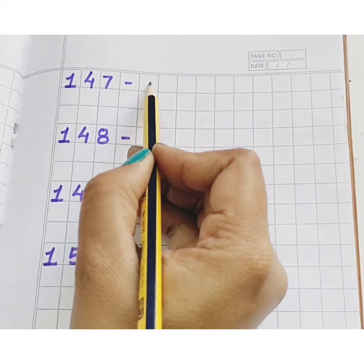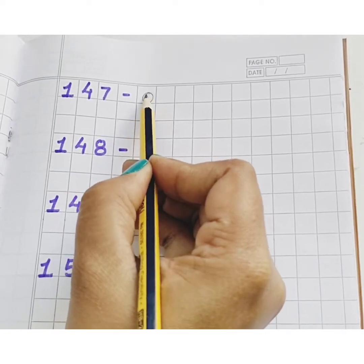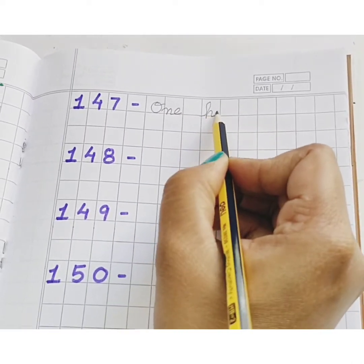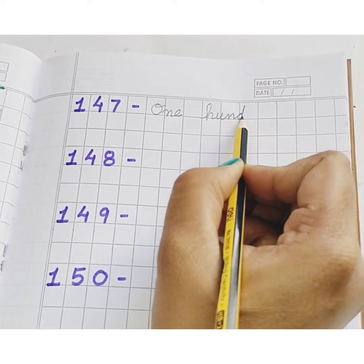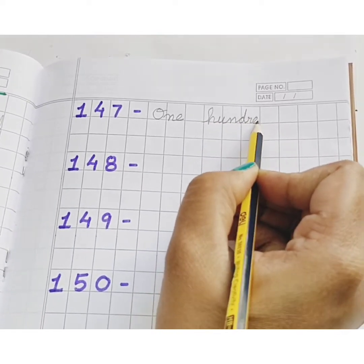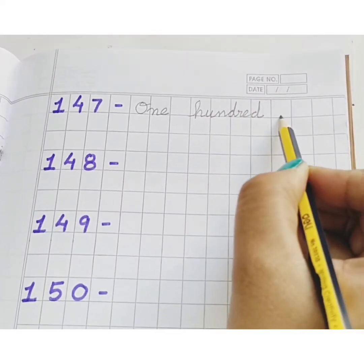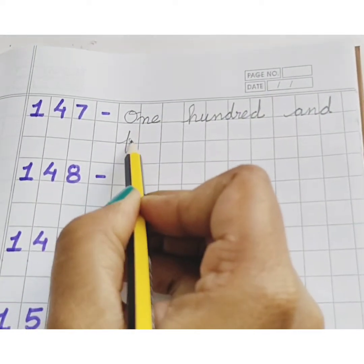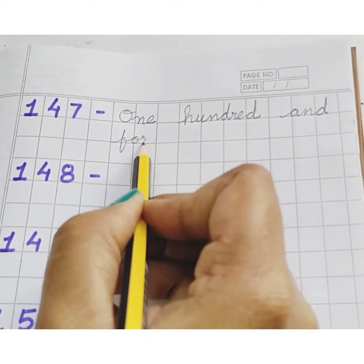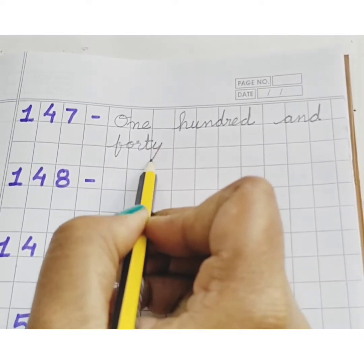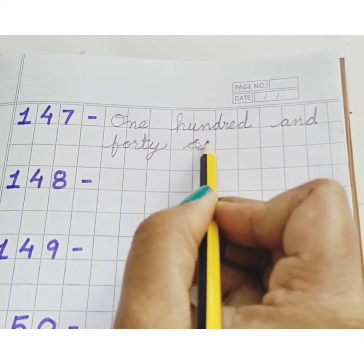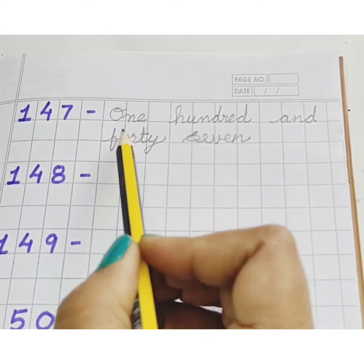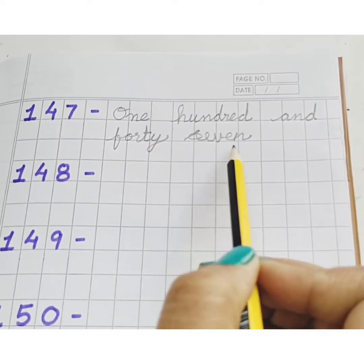146, 147. O, N, E — ONE. H, U, N, D, R, E, D — ONE HUNDRED. AND F, O, R, T, Y — FORTY. S, E, V, E, N — SEVEN. 7. One Hundred and Forty Seven. 147.